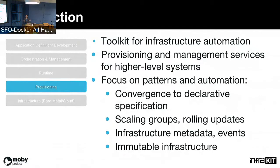We also provide things around how to introspect your infrastructure — how to get metadata information about your infrastructure in terms of what network it's on, what subnets, and what that environment looks like, as well as the events happening within that infrastructure. Finally, we really focus on immutable infrastructure, very much in line with the LinuxKit philosophy of creating customized OS images so that your infrastructure is truly immutable. InfraKit has primitives to support that.